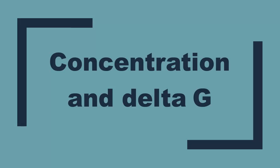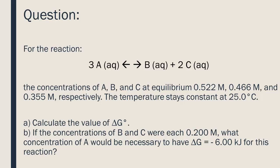Concentration and delta G. For the following reaction, the concentrations of A, B, and C at equilibrium are 0.522 molar, 0.466 molar, and 0.355 molar respectively. The temperature stays constant at 25.0 degrees Celsius.